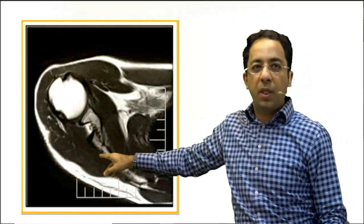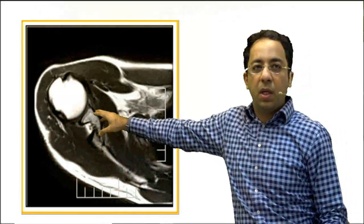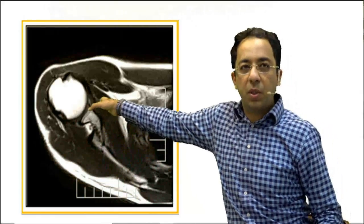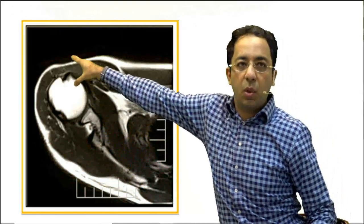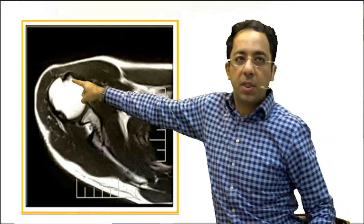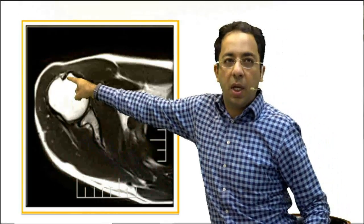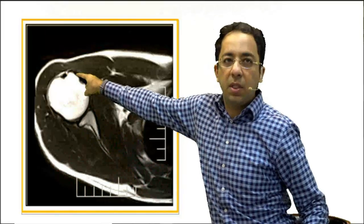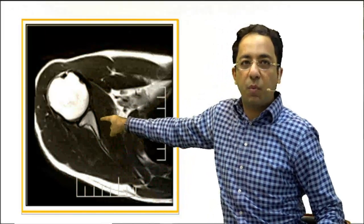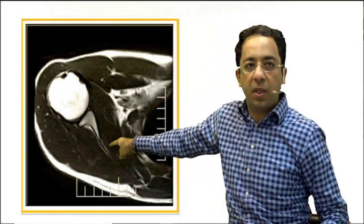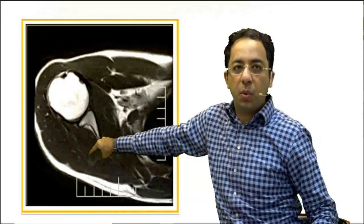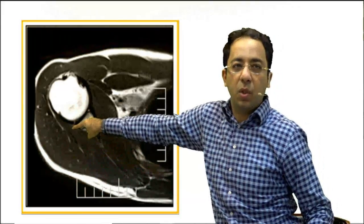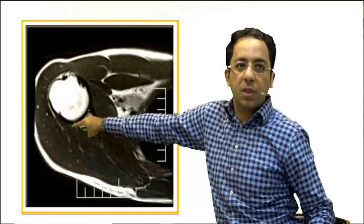As we go down on the axial plane, you can see the scapular blade, and anterior to it you can see the subscapularis with its tendon inserting onto the lesser tubercle. You can also see the long head of biceps at this level. That insertion of the subscapularis was the topic for today. Behind the scapular blade you can see the infraspinatus inserting onto the humerus.